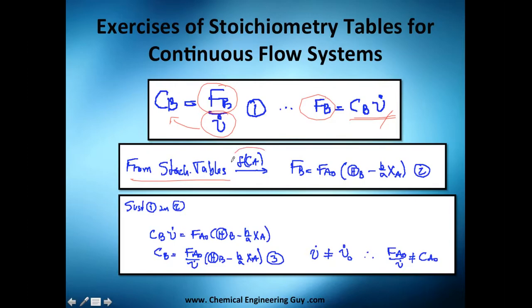Now from stoichiometry tables, remember that's in function of concentration, we can change it. We change flow of B equals initial flow rate of A, this fancy function. Since it's a reactant is negative, and this stoichiometric value B divided by A times the conversion.